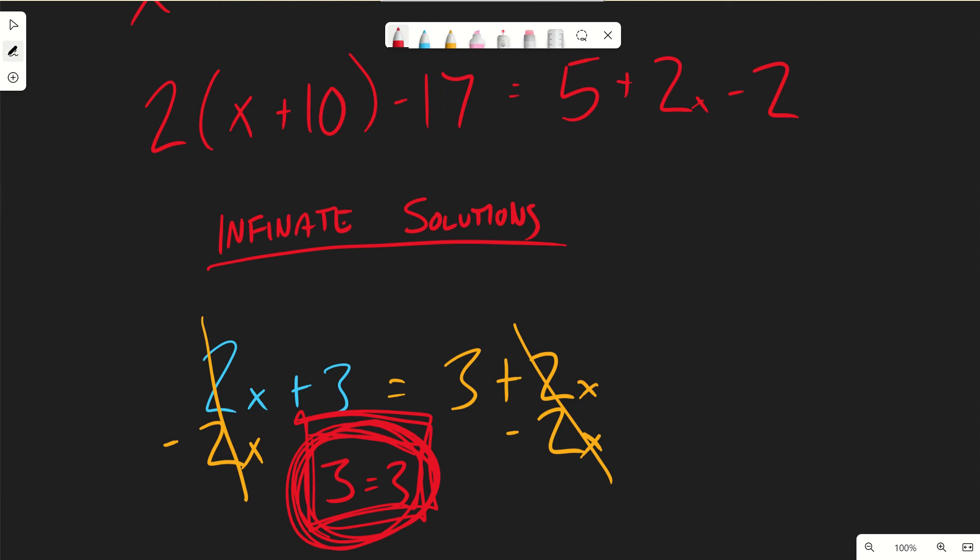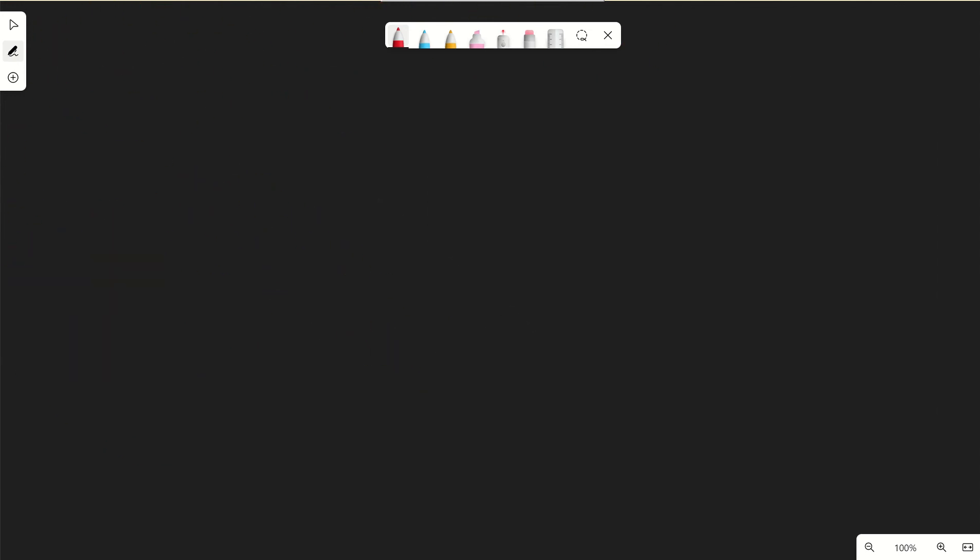Now, let's say I had something like 3 times 4 plus x equals 3x minus 7. Okay, well, I'm going to distribute my 3. This is going to give me 12 plus 3x equals 3x minus 7. I'm going to minus my 3x to cancel it out, minus my 3x. That's going to cancel out. I have no more x's anywhere.